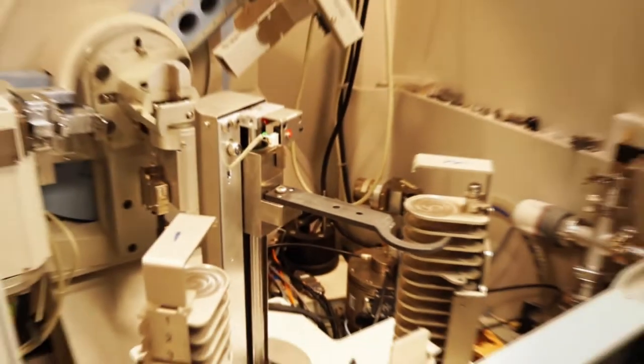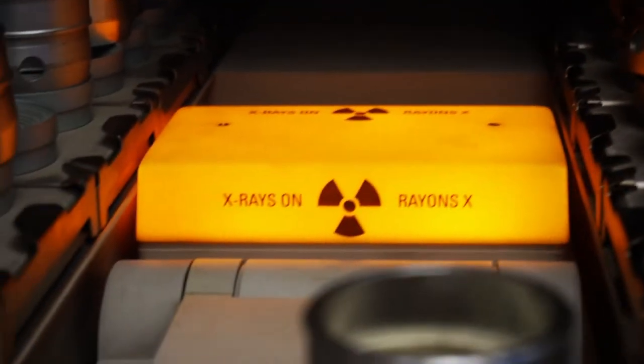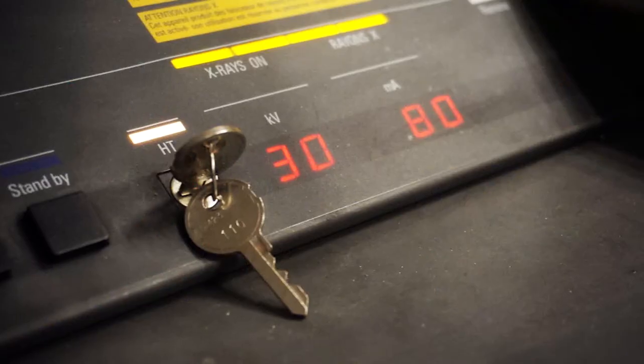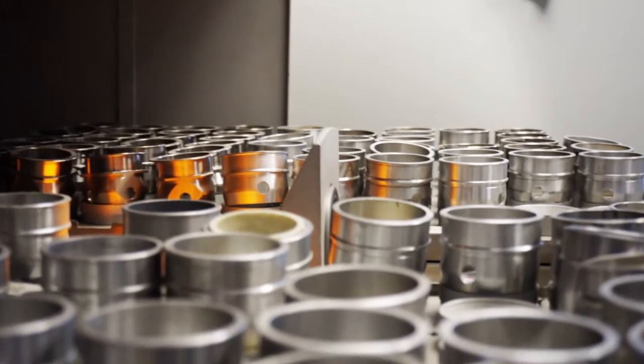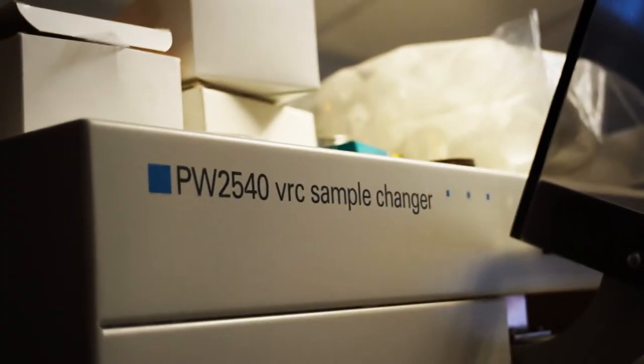A lot of what we do here is the characterisation and measurement of a whole range of materials. This machine here is an X-ray fluorescence machine that uses high intensity X-rays to bombard a sample, and by measuring those X-rays, the amount of them and the wavelength of them, we can identify what materials were in the sample.